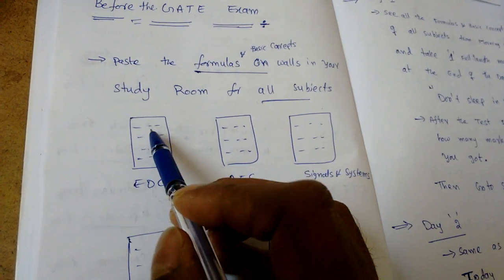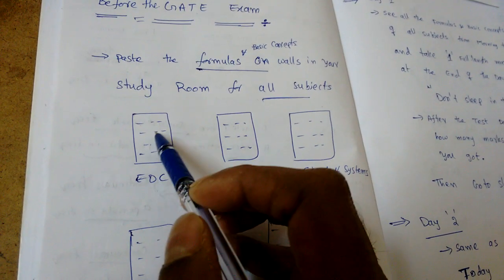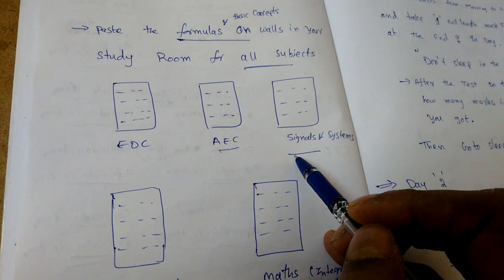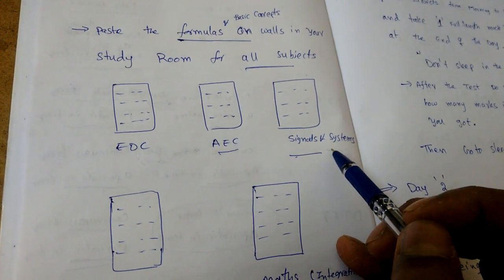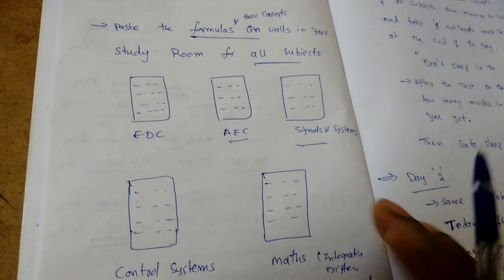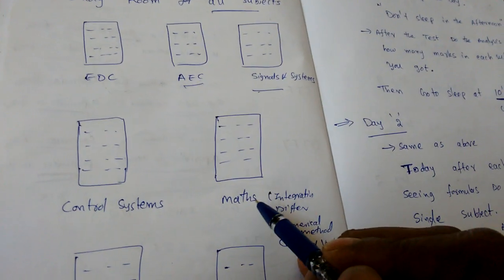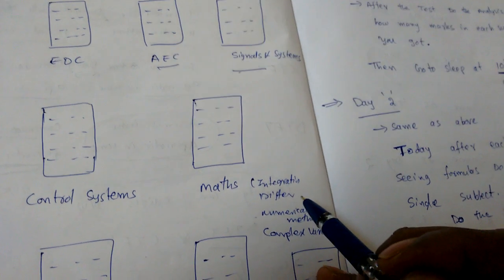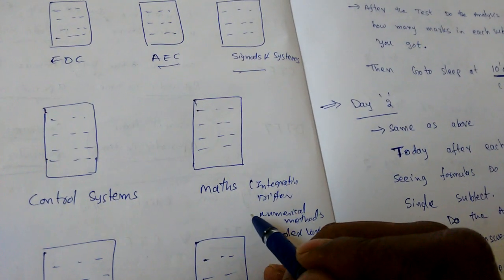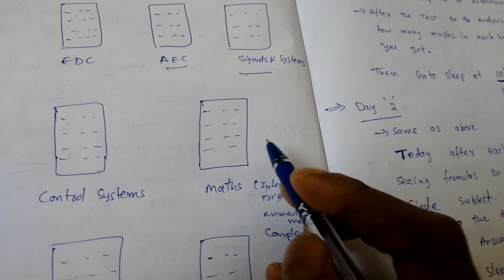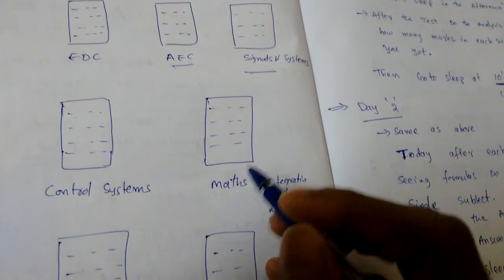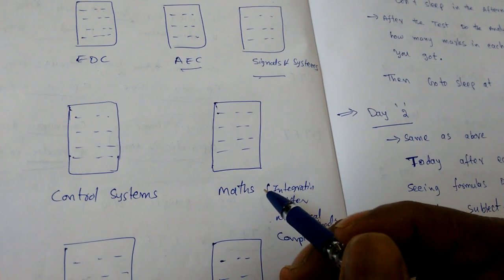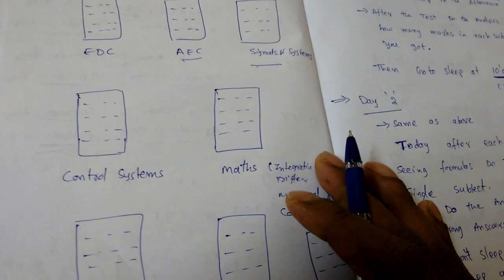For EDC, some basic concepts or basic formulas in each concept. Similarly, AEC, signals and systems - all the properties of Fourier transform or discrete time Fourier transform, Laplace transform or z-transform, etc. Similarly, control systems, mathematics - integration formulas, differentiation formulas, numerical methods formulas like bisection method, regula falsi method. Then complex variables - how to find residue of a function or integration of a complex function.